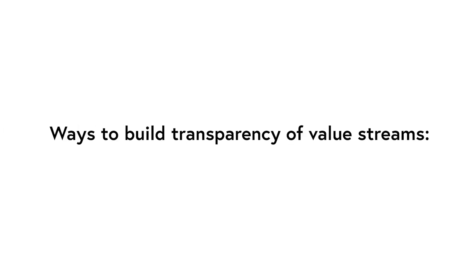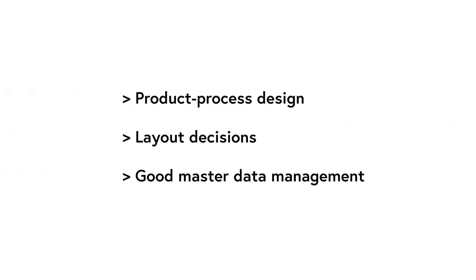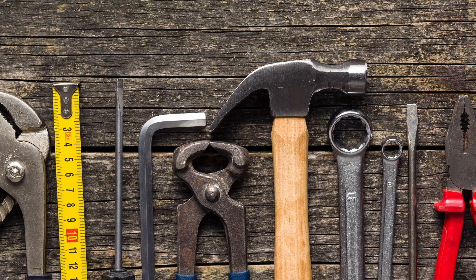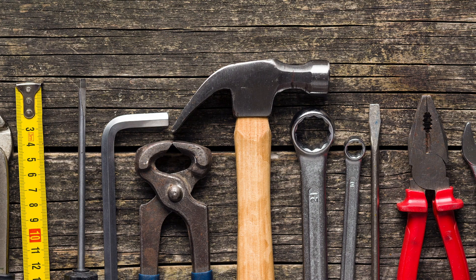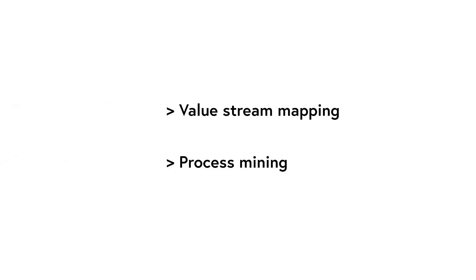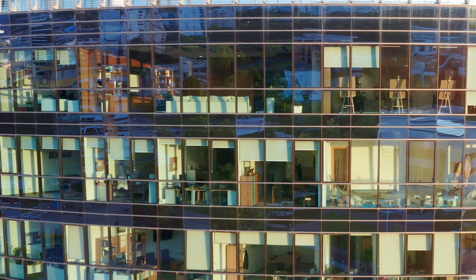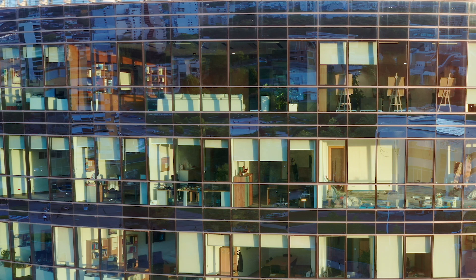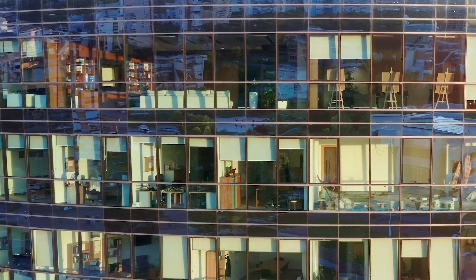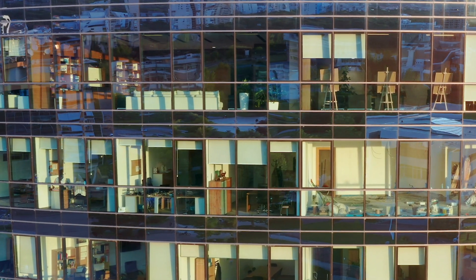There are three ways to build transparency of value streams into a manufacturing system: by product process design, by layout decisions, and by good master data management. There are also several tools that allow mapping value streams in an existing factory, including all kinds of process mapping methods. In lean practice, value stream mapping has become the most common tool and is indeed a useful exercise. But for companies with many product families, complex material routings and large variations in volumes and varieties, doing regular value stream mapping is a daunting task.